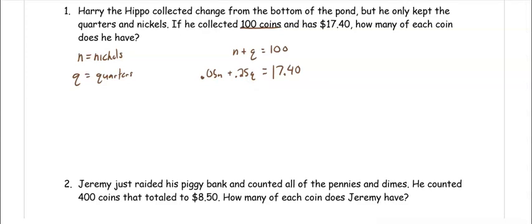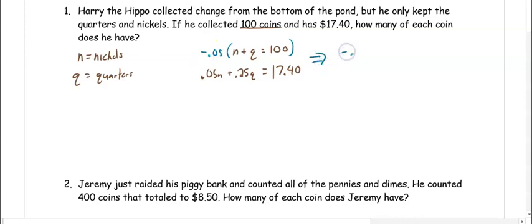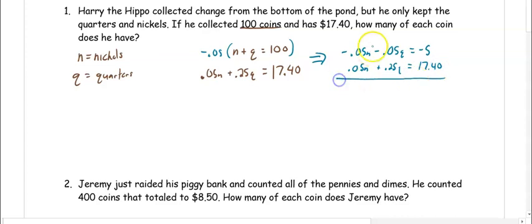Now we can use elimination to get rid of a variable. I want to get rid of the N. What cancels out with 0.05 would be negative 0.05, so we distribute that to all three terms: negative 0.05N minus 0.05Q equals negative 5. Then we have 0.05N plus 0.25Q equals 17.40. When we add straight down, the N's cancel, and we're left with 0.20Q equals 12.40.